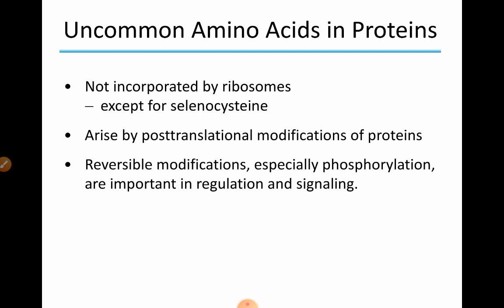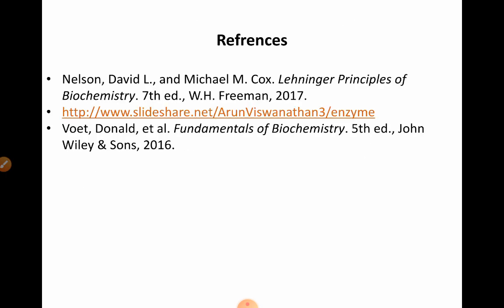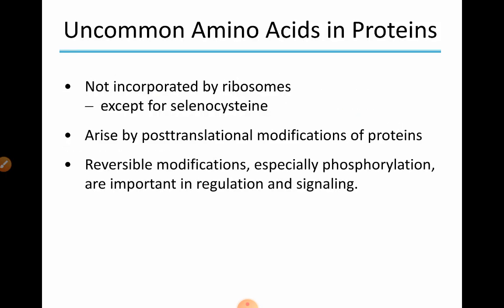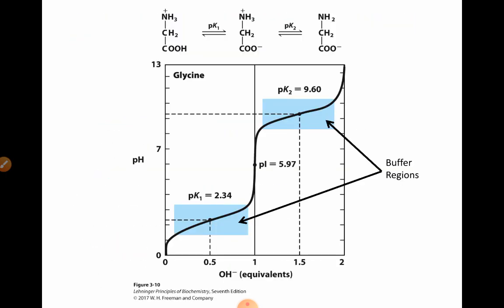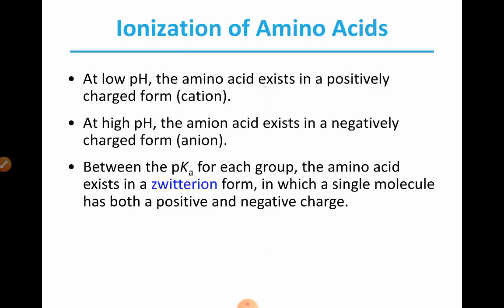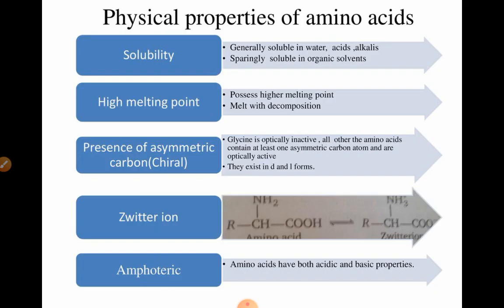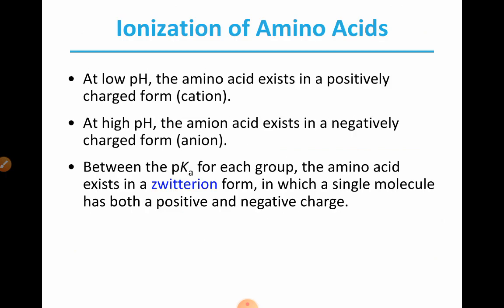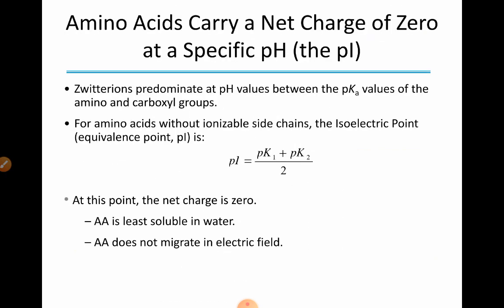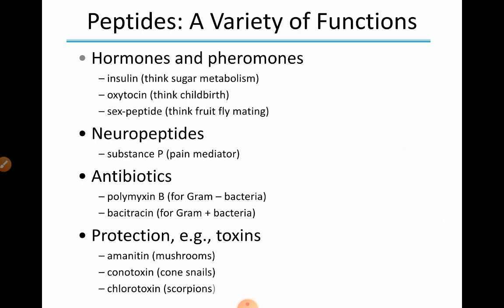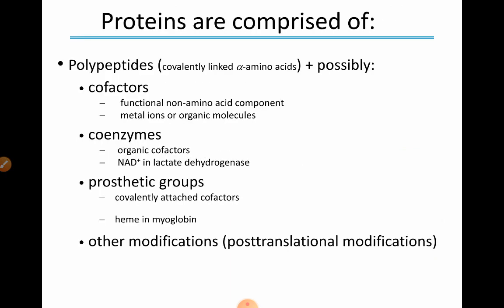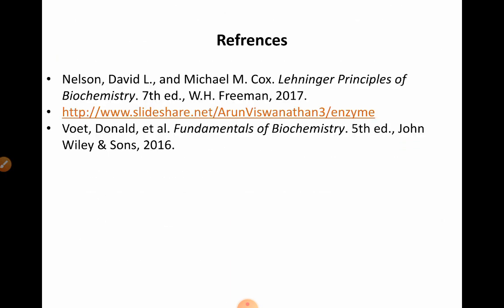Reversible modifications, especially phosphorylation, are important in regulation and signaling. To summarize this lecture on the continued properties of amino acids, we have discussed the physical and chemical properties of amino acids, the formation and importance of peptides, and an introduction to proteins. Thank you.